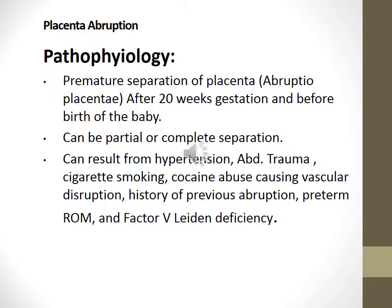Placenta abruption pathophysiology: premature separation of the placenta after 20 weeks gestation and before the birth of the baby; can be partial or complete separation. Can result from hypertension, abdominal trauma, cigarette smoking, cocaine abuse causing vascular disruption, history of previous abruption, preterm rupture of membranes, or Factor V Leiden deficiency. Incidence is about 1 in 75 to 1 in 226 pregnancies. Etiology is detachment of all or part of the placenta from the uterus. Classification system: Grade 1 is mild, Grade 2 is moderate, Grade 3 is severe. Classification system is in your book on page 327.